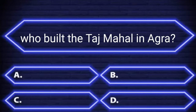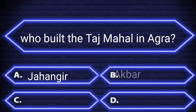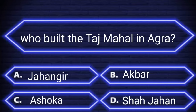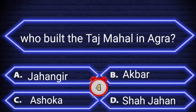Who built the Taj Mahal in Agra? A. Jahangir, B. Akbar, C. Ashoka, D. Shah Jahan. Your time starts now. The right answer is Shah Jahan.